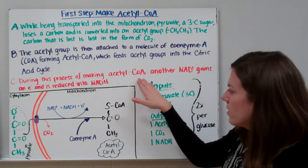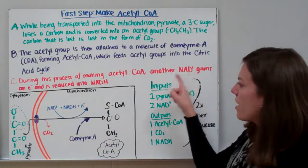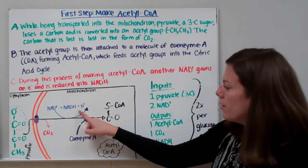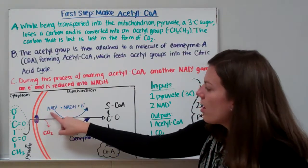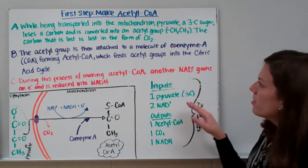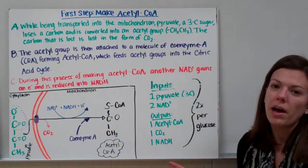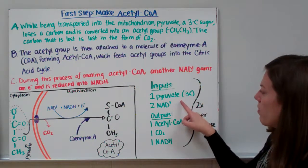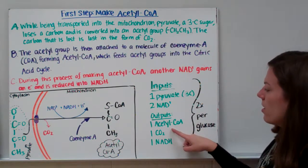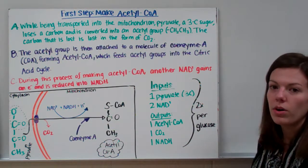During the process of making acetyl-CoA, another NAD gains an electron and is reduced into NADH — reduction means gaining electrons. Our inputs for this step are one pyruvate (a 3-carbon sugar) and two NADs. Our outputs are one acetyl-CoA, one carbon dioxide, and one NADH. This happens twice per glucose molecule since glycolysis produces two pyruvates.